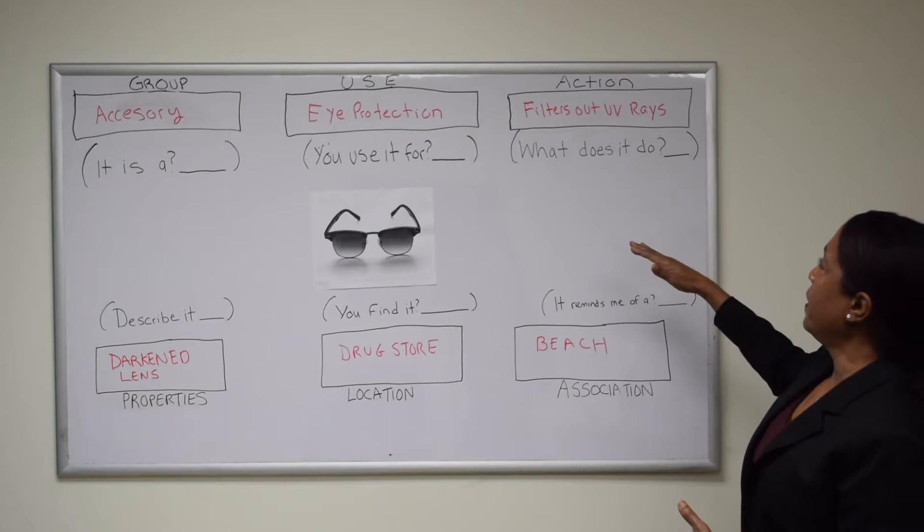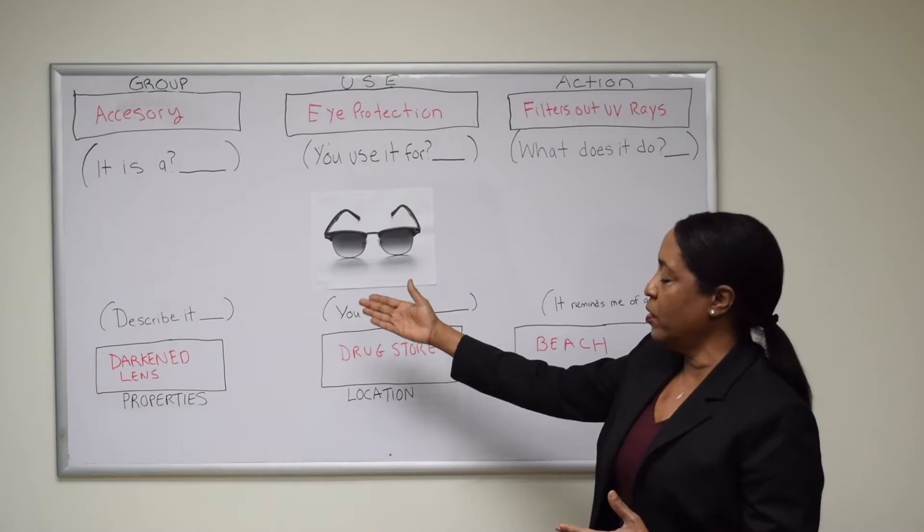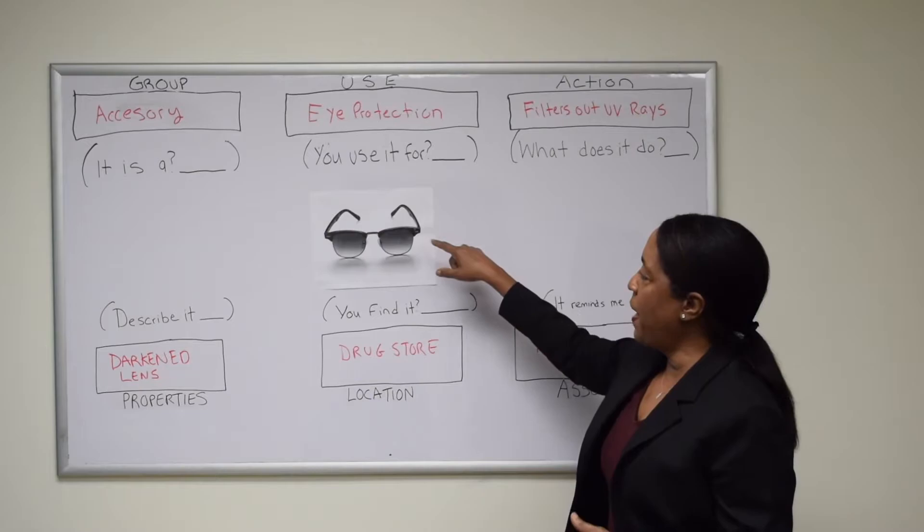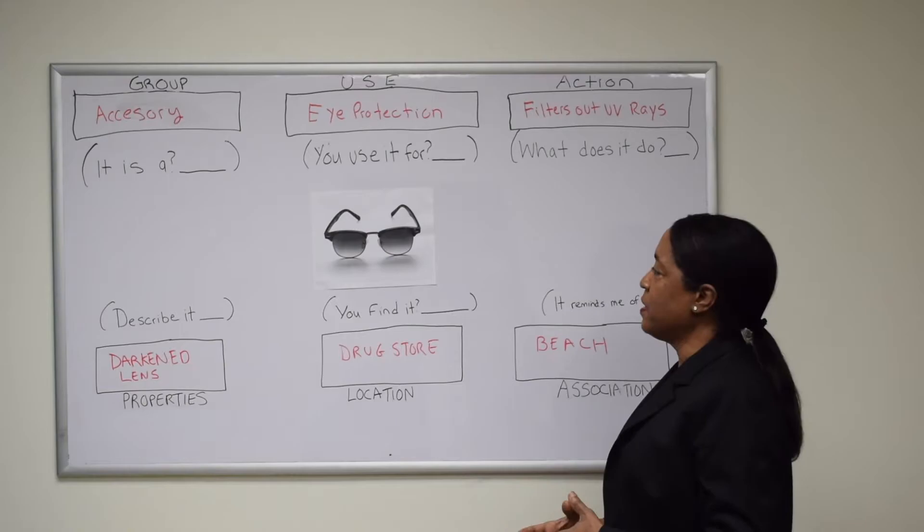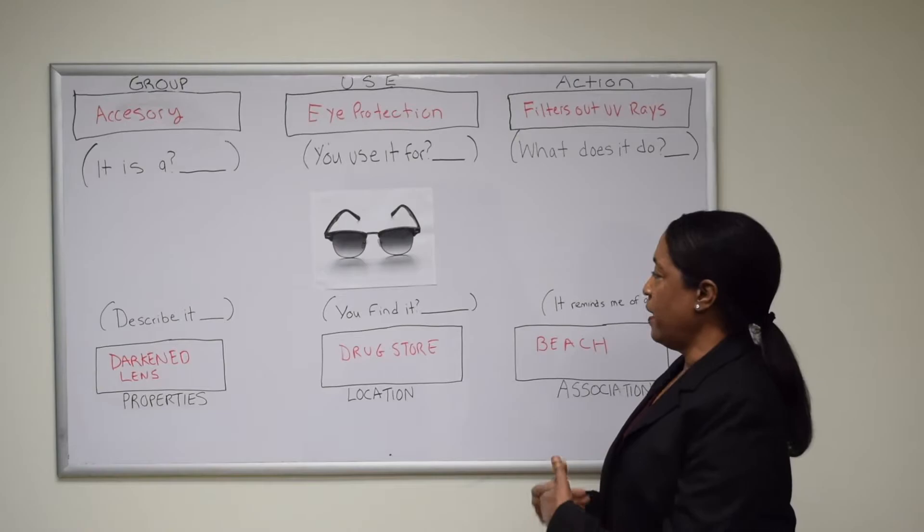Next we have 'what does it do,' which correlates with an action related to the item. A patient might say 'filters out UV rays.' Next we have properties - the patient has to describe the item. They possibly would say 'they have darkened lens' or they might try to name something about the arms or rims. They can name any particular feature about what they look like.